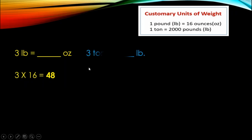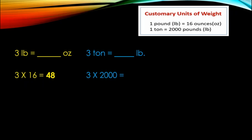Next, 3 tons equals how many pounds? Ton to pounds — left to right, larger unit to smaller unit, so you will do multiplication. 3 times 2,000, and the answer is 6,000. 3 tons equals 6,000 pounds.